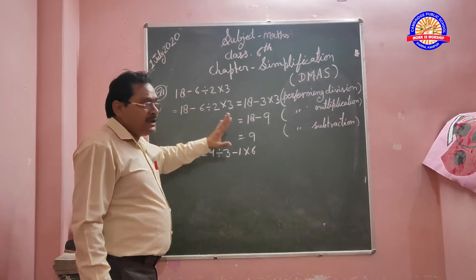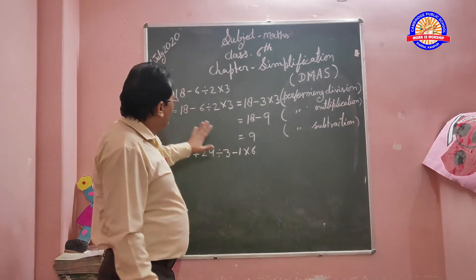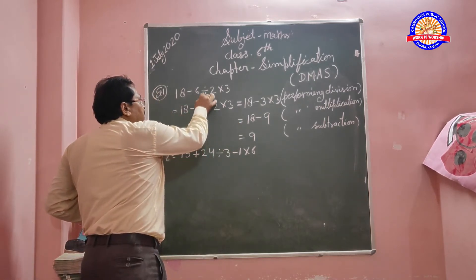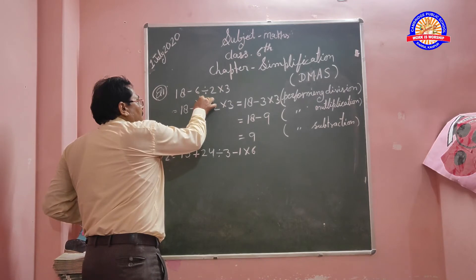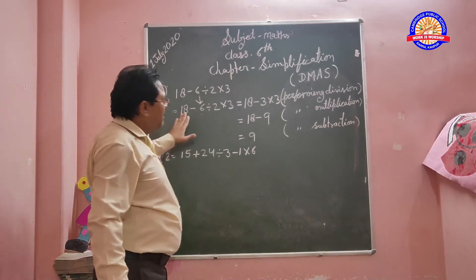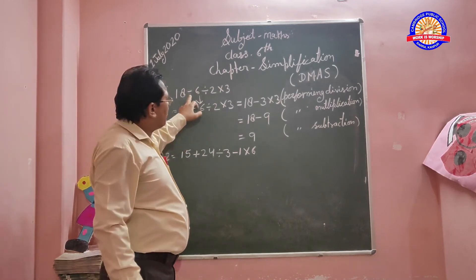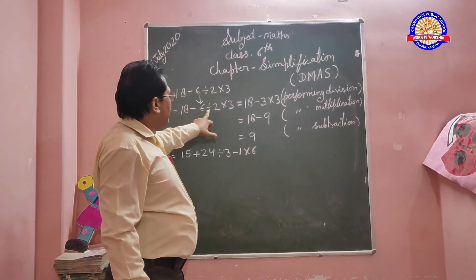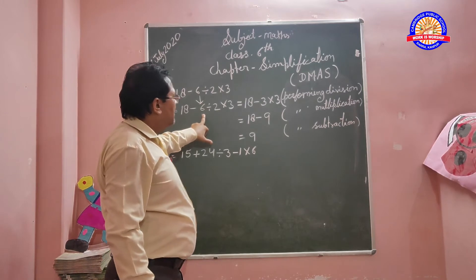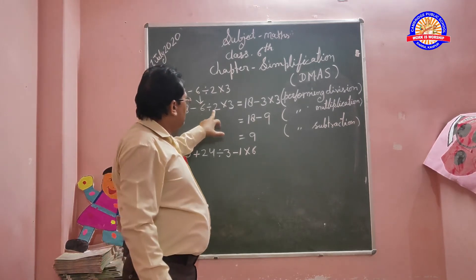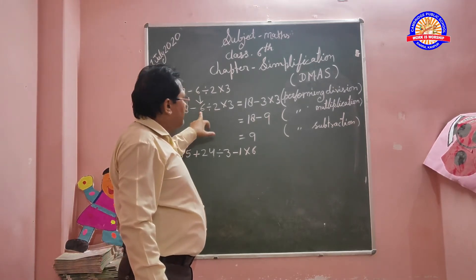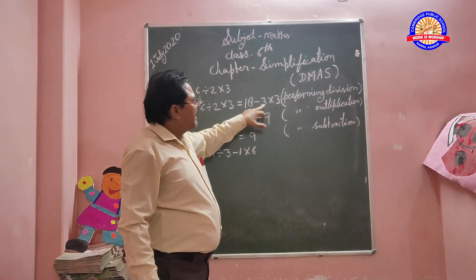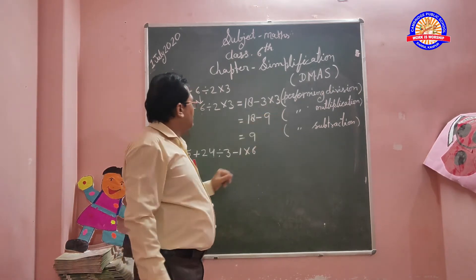Firstly, you would do the divide. 6 divided by 2 equals 3. So we have 18 minus 3 into 3.